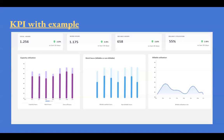For example, in the screenshot, you can see the graph of capacity utilization, work hours, and billable utilization. All these are metrics or Key Performance Indicators. The terms used for metrics may be different based on different projects, but the motive of KPI is the same everywhere — that is, to measure the performance.